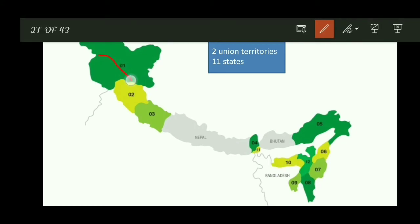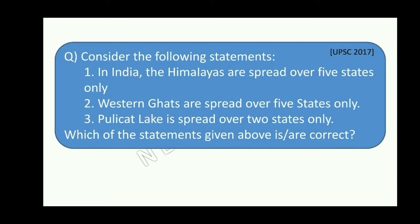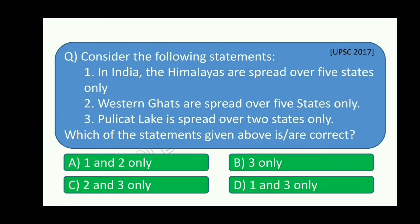We are part of Indian states. There are 11 states in the Himalaya. The Union Territory includes Jammu and Kashmir and Ladakh. Then the states are: Himachal Pradesh, Uttarakhand, Sikkim, West Bengal, Arunachal Pradesh, Nagaland, Manipur, Mizoram, Tripura, Assam, and Meghalaya — meaning 11 states and 2 Union Territories are located in the Himalayan region. In India, the Himalayas spread over these 11 states.